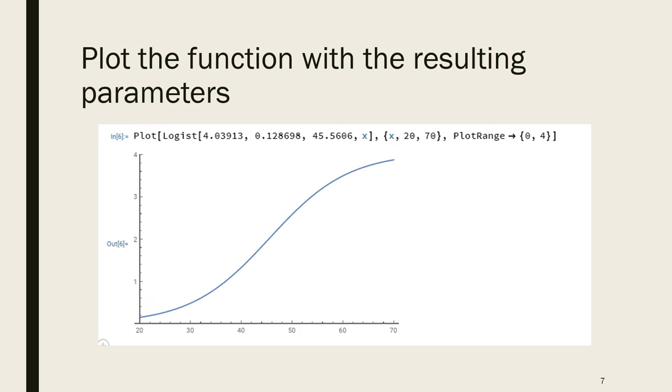Next we are using the plot method. We are plotting the logist function that we defined, putting in the three fit parameters that we found from FindFit, and X is the variable we are plotting over. We're plotting from X of 20 going up to 70 to match the data in the list plot. We've included the plot range to make sure that vertically it goes from 0 to 4. This plot range argument was probably unnecessary, but I found in other scenarios it's useful to get them to match up.